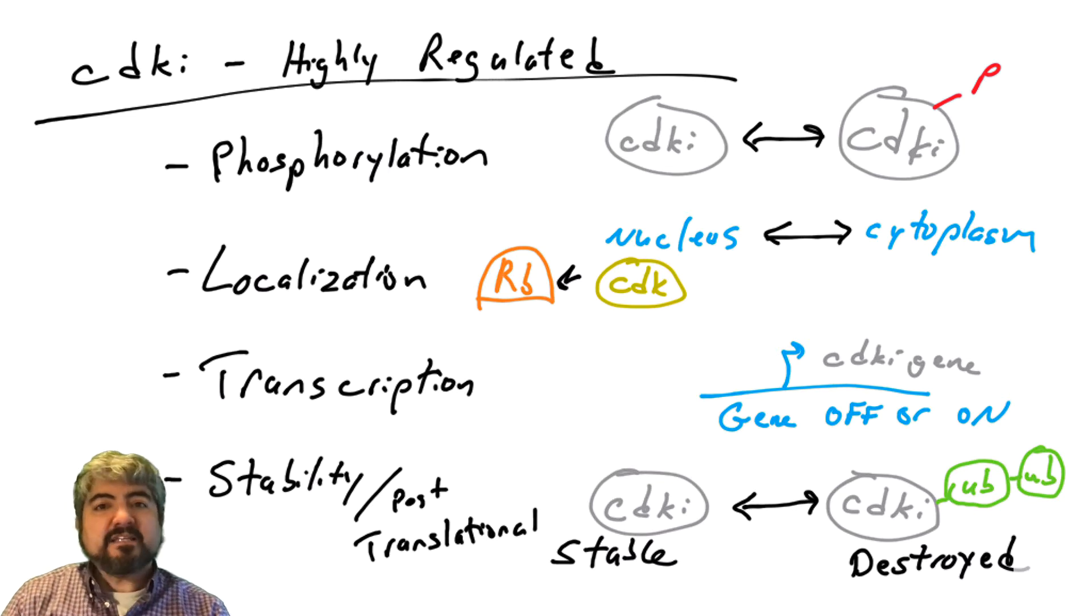And when CDKIs are active, they will halt the cell cycle. They will halt cell cycle progression, and the way they do that is by inhibiting these cyclin-dependent kinases. Cyclin-dependent kinases are kinases that phosphorylate substrates such as RB that help push the cell through the cell cycle.